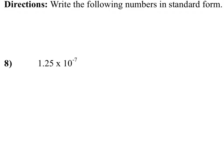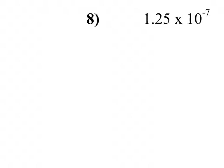All right, I will do this one now. I got this 1.25 route here. Since the exponent of the 10 is negative, it tells me I'm going to move the decimal to the left.